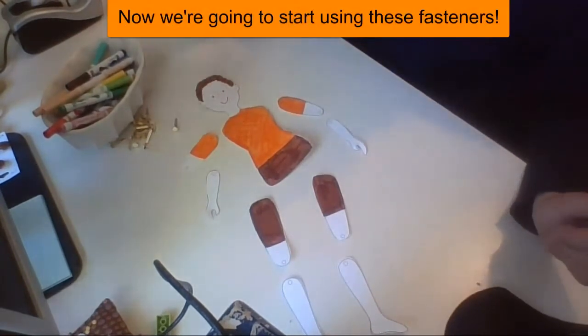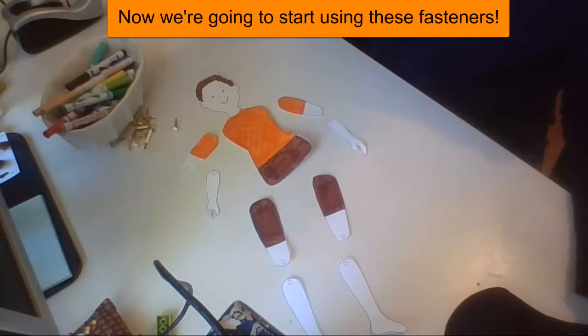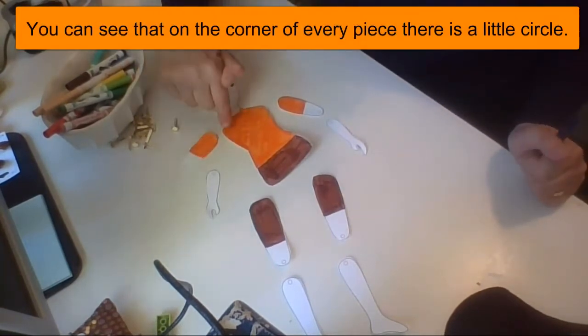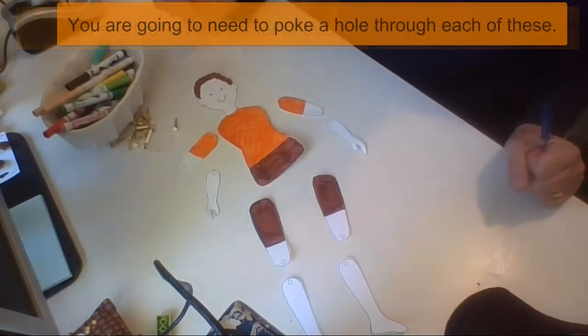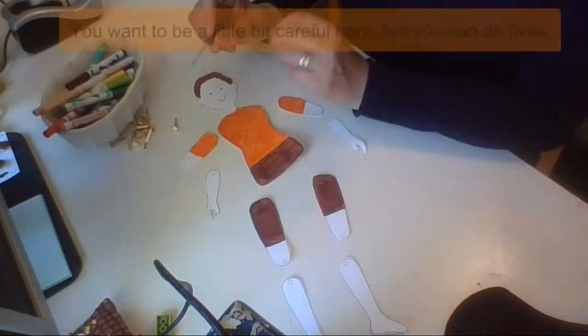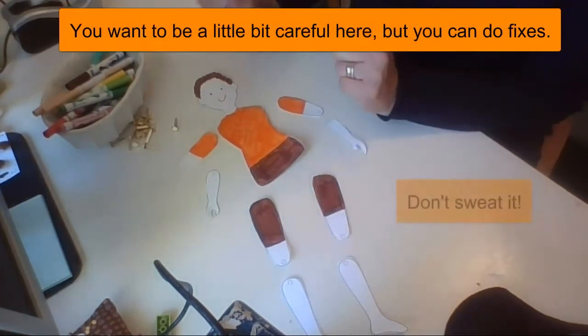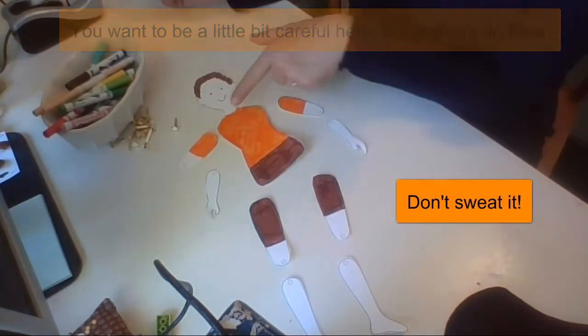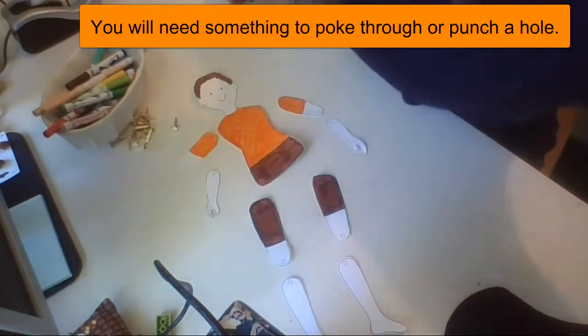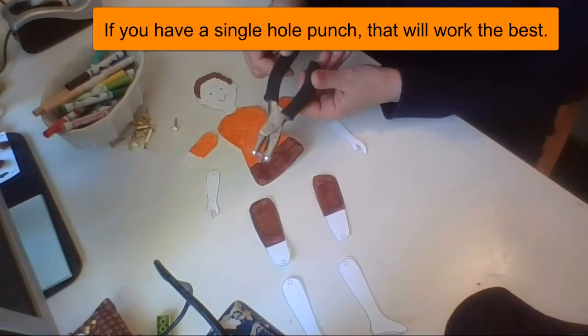Okay, now we're going to start using these fasteners. You can see on the corner of every part, there's a little circle. You're going to need to poke a hole through them. This is, you want to be careful at this part because you don't want to wreck it. You can fix it. Don't sweat it. So you'll need something to poke through or punch a hole if you've got a single hole punch.